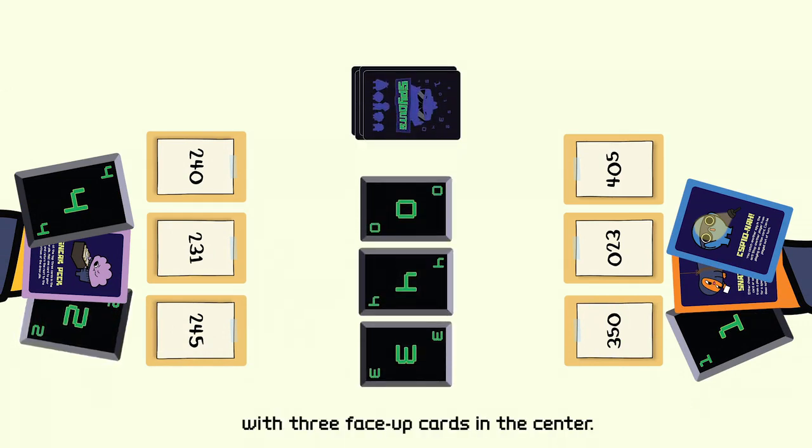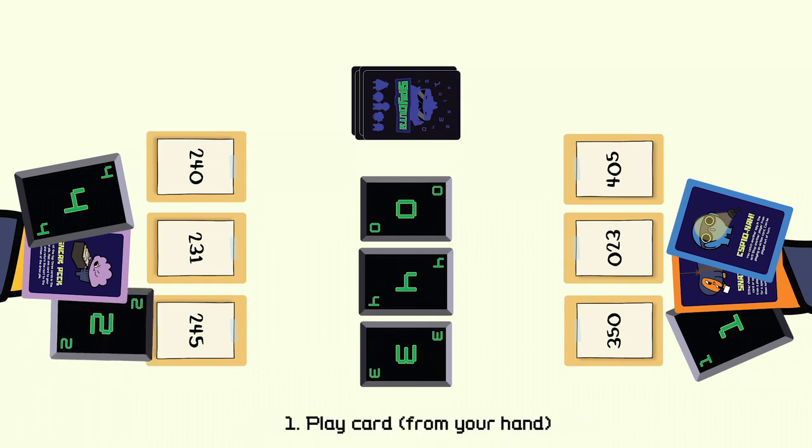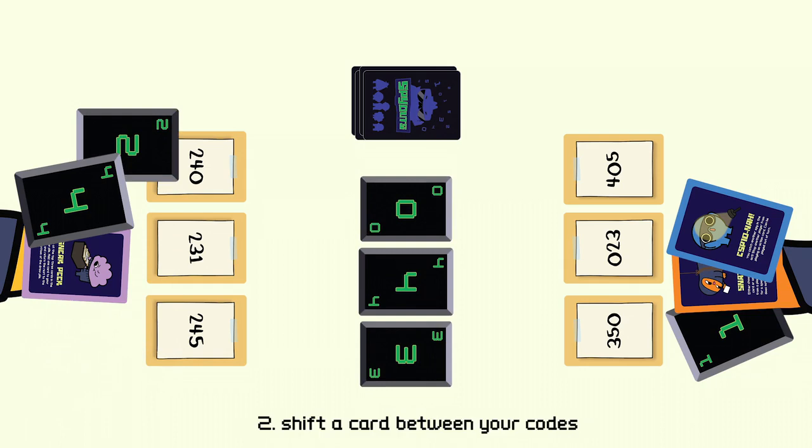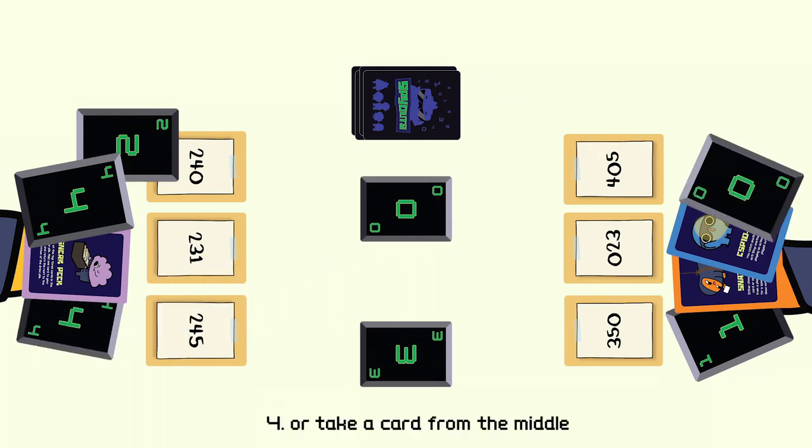With three face-up cards in the center. On your turn, choose from four actions: play a card, shift between codes, draw from the pile, or take from the middle.